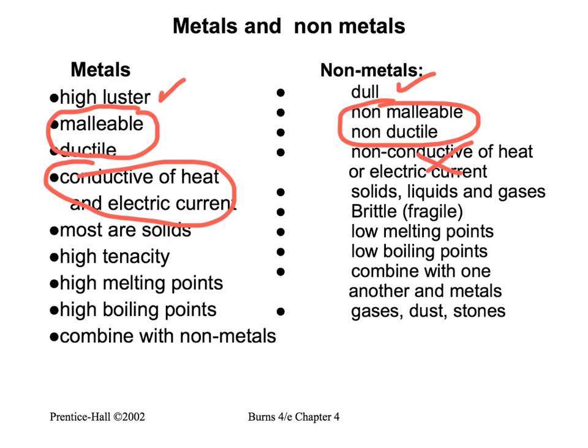So what are non-metals? Actually, non-metals are gases, dust, or stones. Metals have high melting and boiling points. And non-metals have low melting and low boiling points.